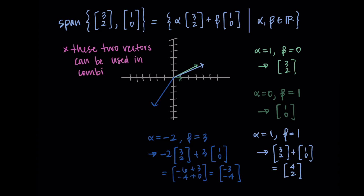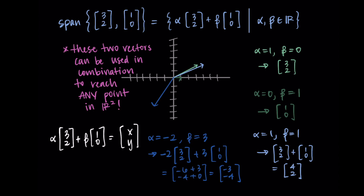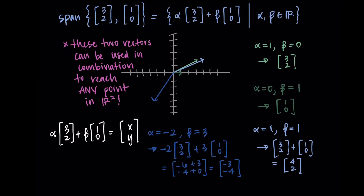My conclusion is that these two vectors can be used in combination to reach any point in R2. Since any vector in R2 can be replicated using one of these linear combinations, we say that these two vectors span R2. How to confirm this more rigorously will be covered in future content, but for now you can see that we can always choose some combination of these to reach every single point.